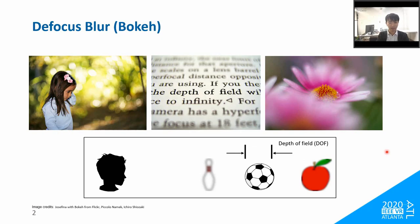Defocus blur, also known as bokeh, is one of the natural visual effects. It has been widely used in photographs and movies to control the visual saliency of a specific area. Defocusing is an important optical effect for human vision to understand the three-dimensional structure of a real scene.